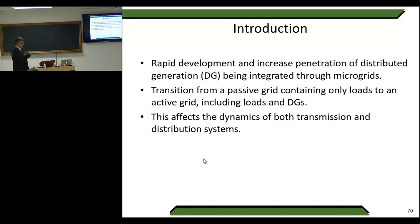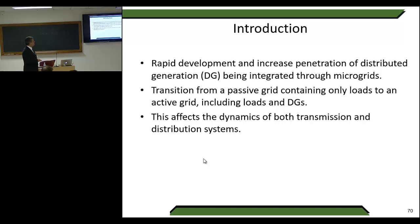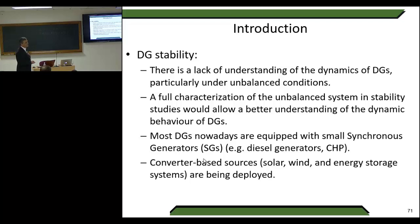This is the aim of the second part. The introduction covers the rapid development and increase in penetration of distributed resources being integrated today in many forms of microgrids — it's not just the panel at home. The transition is from a passive grid containing only loads to an active grid including all these distributed generators, and this will affect the dynamics of both transmission and distribution systems now and especially in the future.